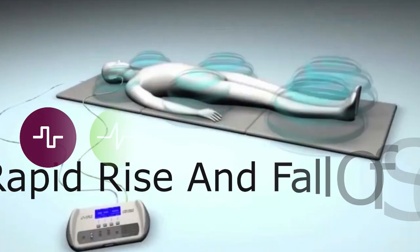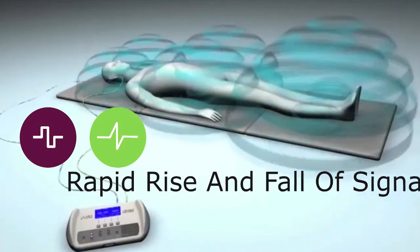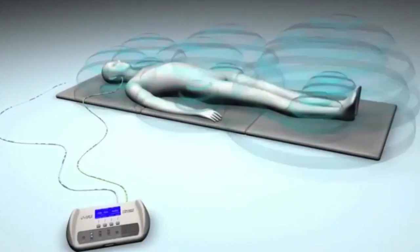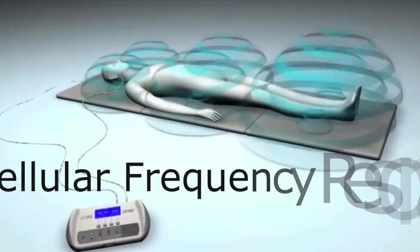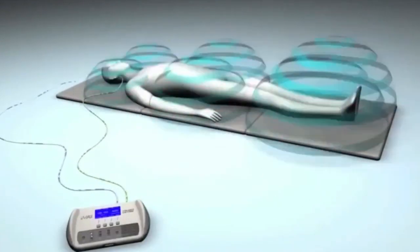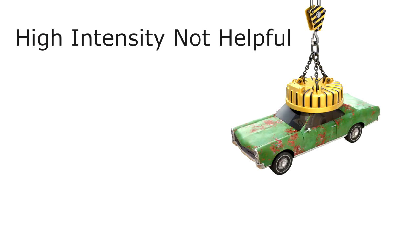It is this rapid rise and fall in the signal of the PEMF device along with the frequency spectrum of the PEMF signal which gives rise to frequency resonances at the cellular level. That is the most important thing when it comes to a PEMF device - not intensity.